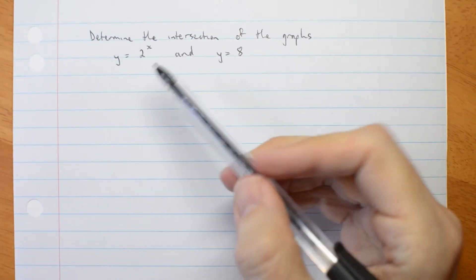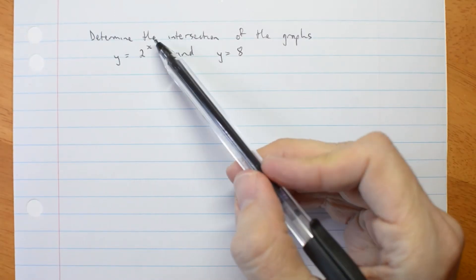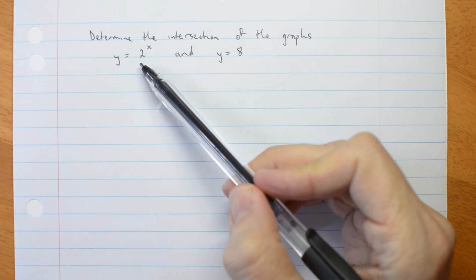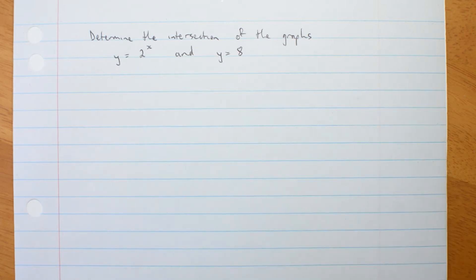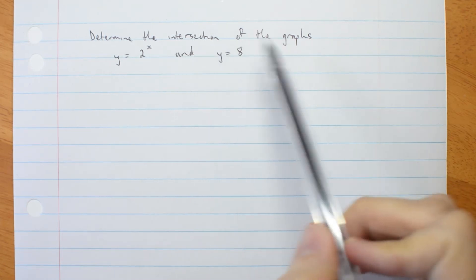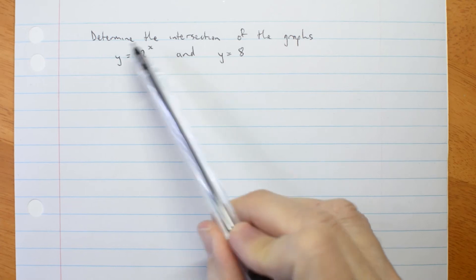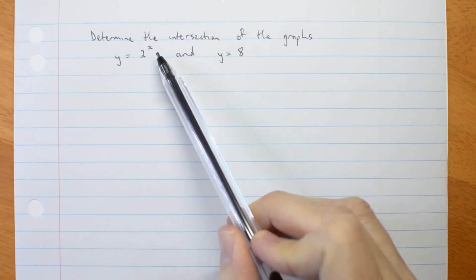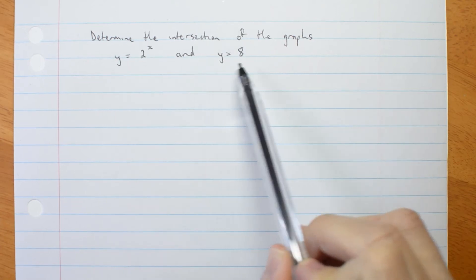Let's try and apply our understanding of exponentials to solve a harder problem. Determine the intersection of the graphs y equals 2 to the power of x, and y equals 8.